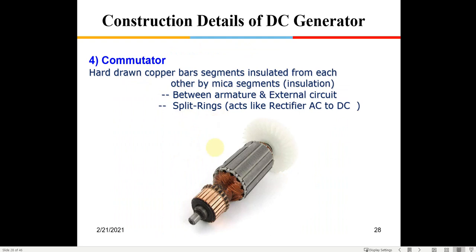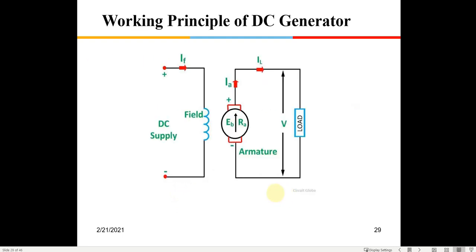The commutator is the component onto which the carbon brush presses for output collection. A split ring with only two sectors is called a split ring, while one with n segments — corresponding to n coils — is called a commutator. The commutator acts like a rectifier, converting the AC EMF induced in the coils into DC output.